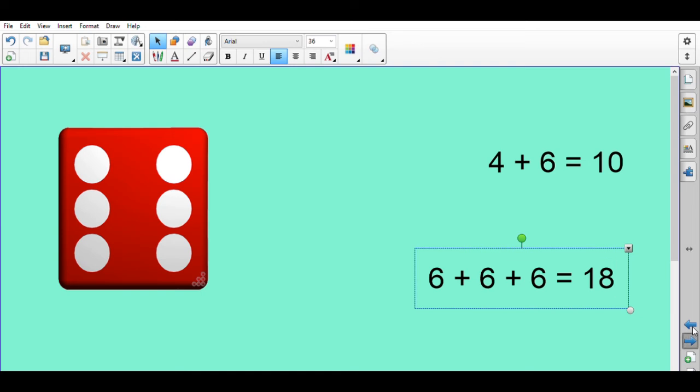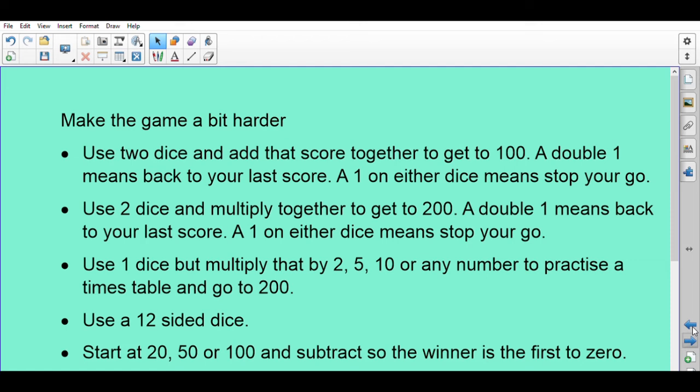Let's have a look at how to make the game harder. You can use two dice and add that score together to get to 100. A double one means you go back to your last score. A one on either dice means stop your go. You could use two dice and multiply together to get to 200. Again, a double one, go back to your last score. A one on either dice means stop your go.